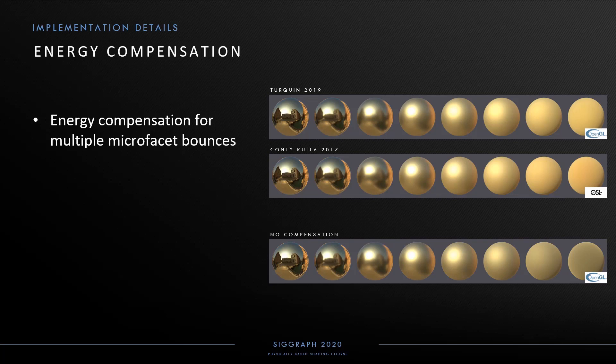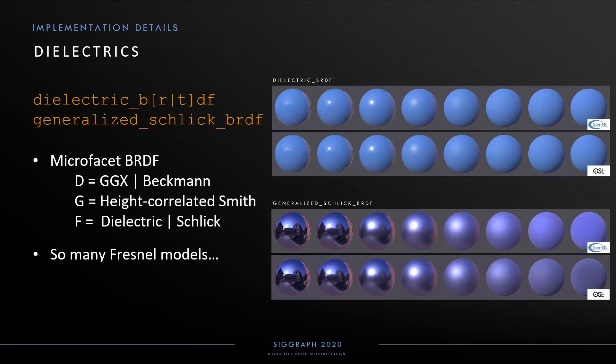For offline rendering, an option is to use the method from Conti and Kulla instead. Here we show gold rendered with these two methods and a comparison with energy compensation disabled. For our dielectric nodes, we use the same microfacet model with different Fresnel terms: either a physical dielectric Fresnel or a Schlick Fresnel with facing and grazing reflectance. Including the conductor Fresnel, we now have three different Fresnel models — an intentional choice in MaterialX since popular shading models rely upon each of these approaches for accurate rendering.